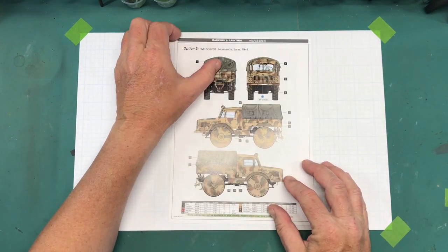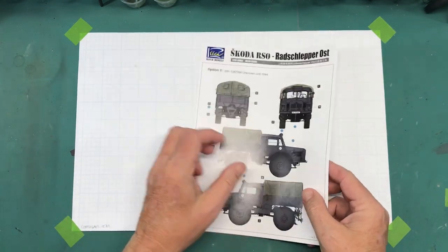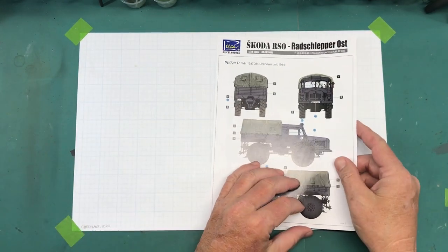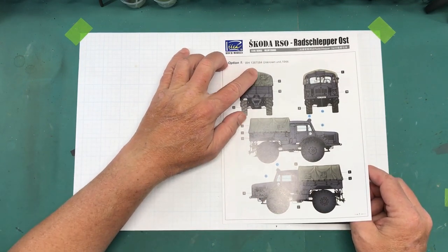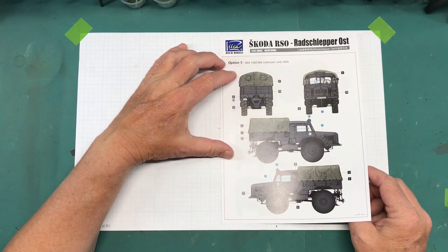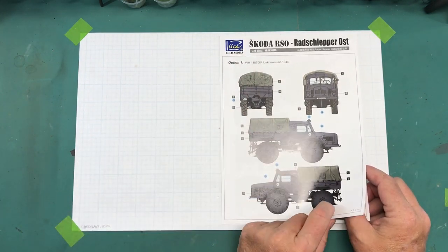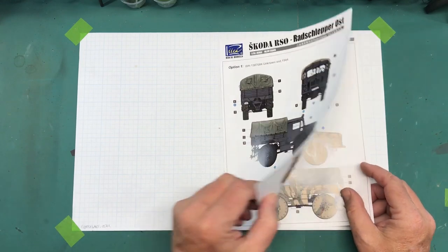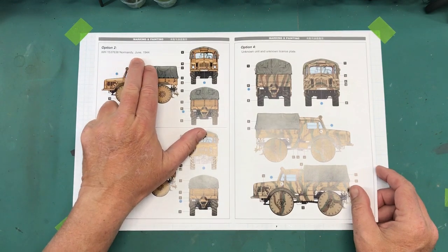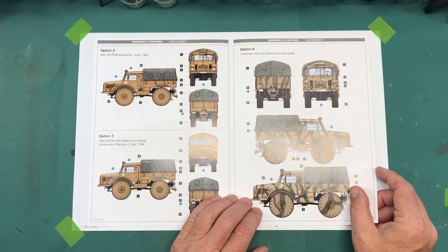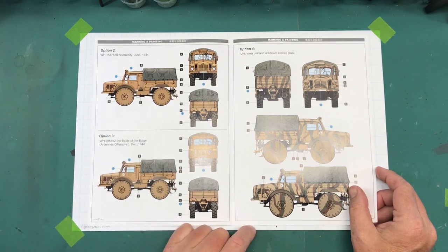Alright so here is the color options. Looks like five options. Option one, an unknown unit 1944, which looks like an overall gray with kind of a green canvas top. Some decals. And you have option two which is Normandy June 1944, which looks like a dunkel gelb with a green canvas top.